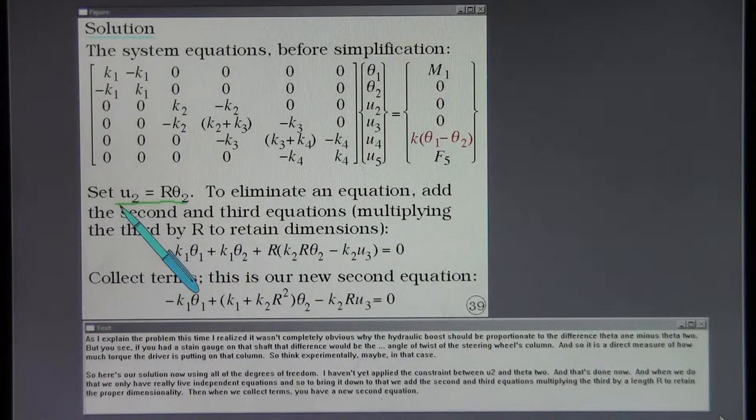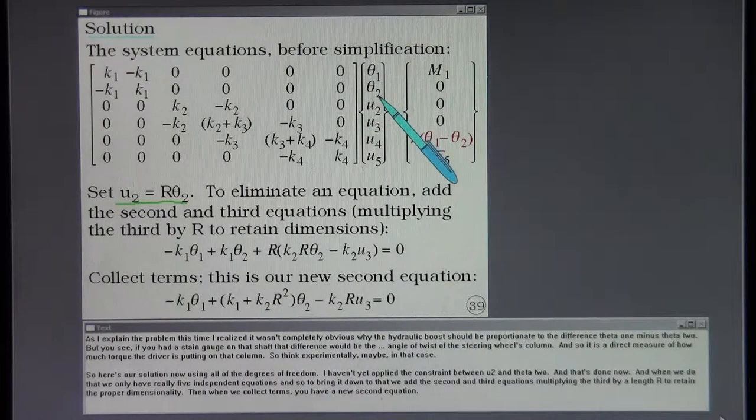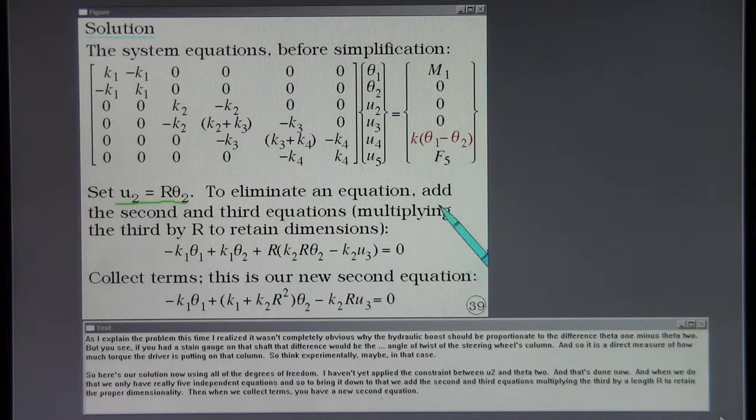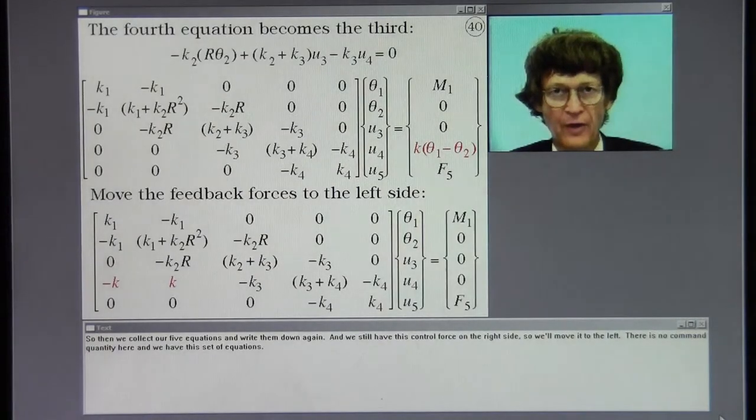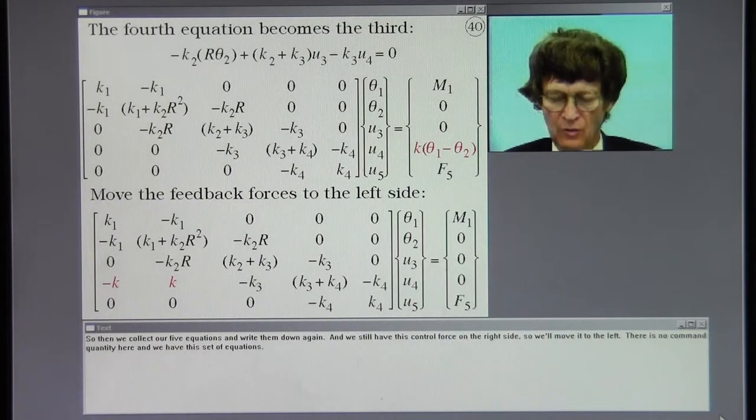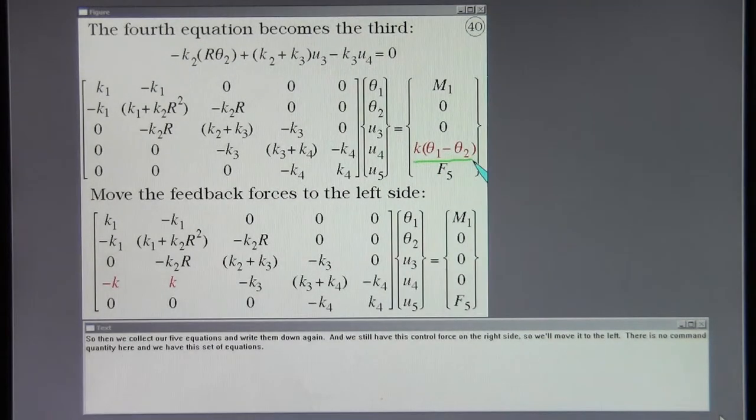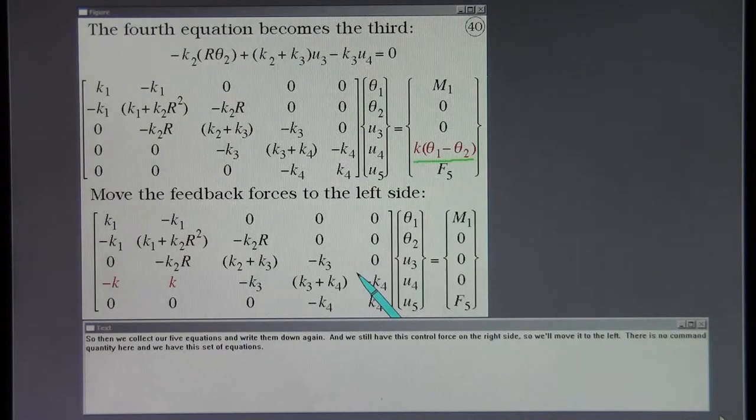And when we do that, we only have really five independent equations. And so to bring it down to that, we add the second and third equations, multiplying the third by a length cap R to retain that proper dimensionality. Then when we collect terms, you have a new second equation. So then we collect our five equations and write them down again. And we still have this control force on the right side. So we'll move it to the left. There is no command quantity here. And we have this set of equations.